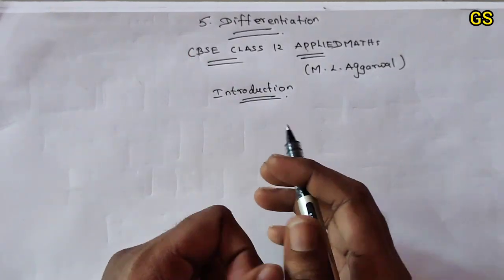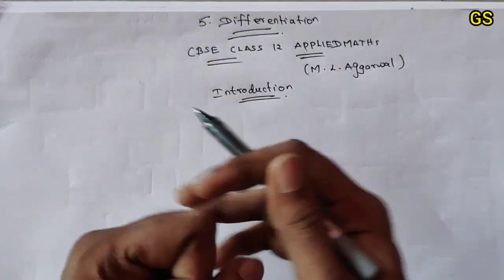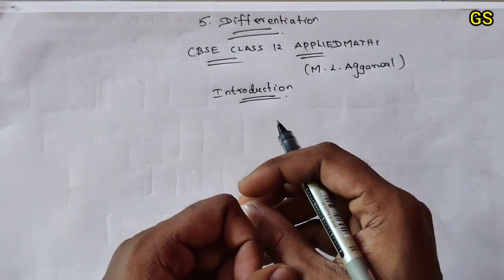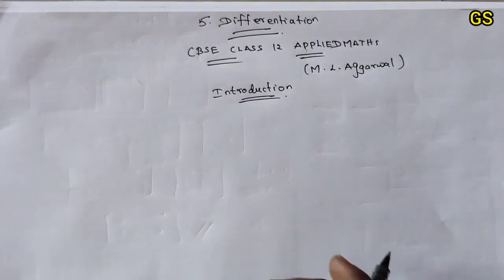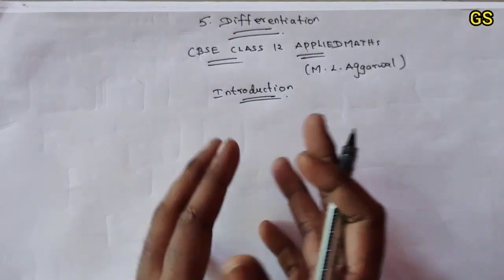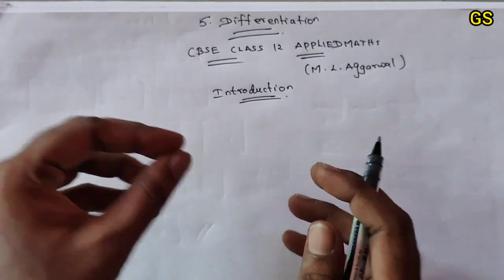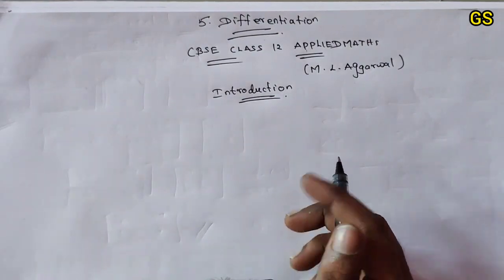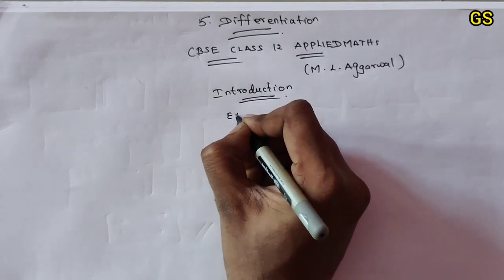So for differentiation, we will talk about the 11th Applied Math. We will talk about the same thing. The differentiation is a little bit easier. It is a very small chapter, easy concept. We will talk about exercise number 5.1.